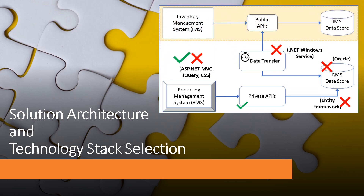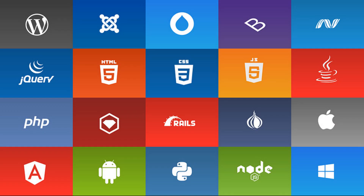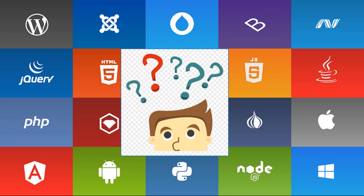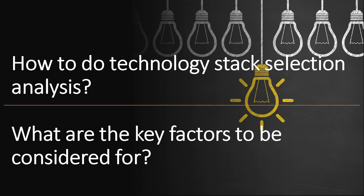A vital part of creating solution architecture is the selection of technologies for each of the components. When selecting a technology stack, you should look at it from an architectural and development perspective as well. One of the oddest things about technology selection is that for every problem there are several technology options and a lot of information available about them. Fortunately, selecting the right technology stack is not that tricky, and you can quickly trim the options down by considering some of the key factors that we are going to see in this video.